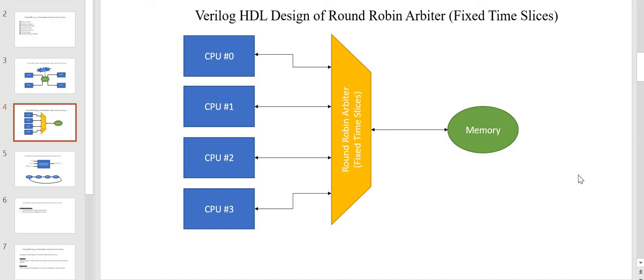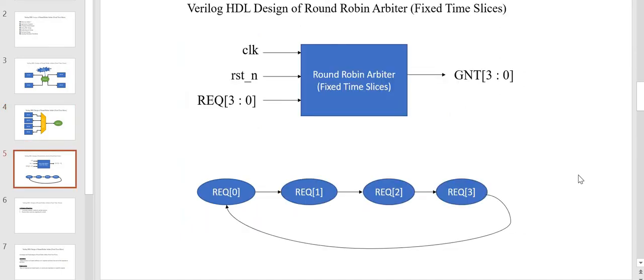For example, if all the CPUs are trying to access memory at the same time, they will get access one by one — first CPU 0, then CPU 1, then CPU 2, then CPU 3. One important point to note: this arbiter implements a fixed time slice, meaning every CPU will have a predefined fixed time to access the memory. The round robin arbiter design will have a clock signal, reset signal, four requests, and based on the request and the round robin algorithm it will grant access to one requester at a time.